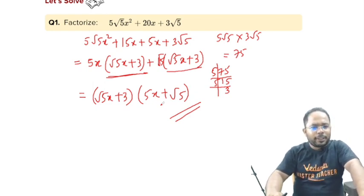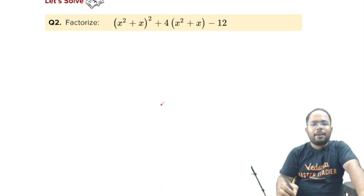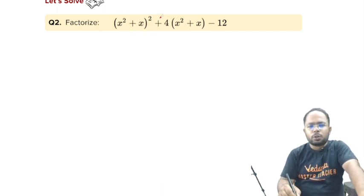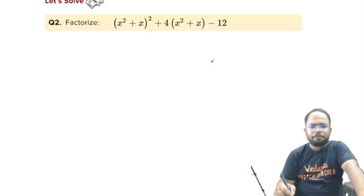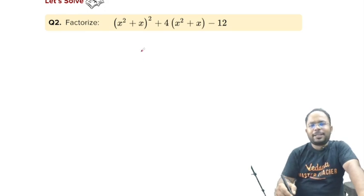Let us move on to the next question students. Factorize x² plus (x² + x)² plus 4(x² + x) minus 12. Click on the pause button, solve it and then verify when I complete it.